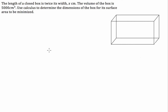Hi guys, optimisation question today. The question says that we've been given a length of a closed box that's twice its width. The volume of the box is 5,000 centimetres cubed. Use calculus to determine the dimensions of the box for its surface area to be minimised.